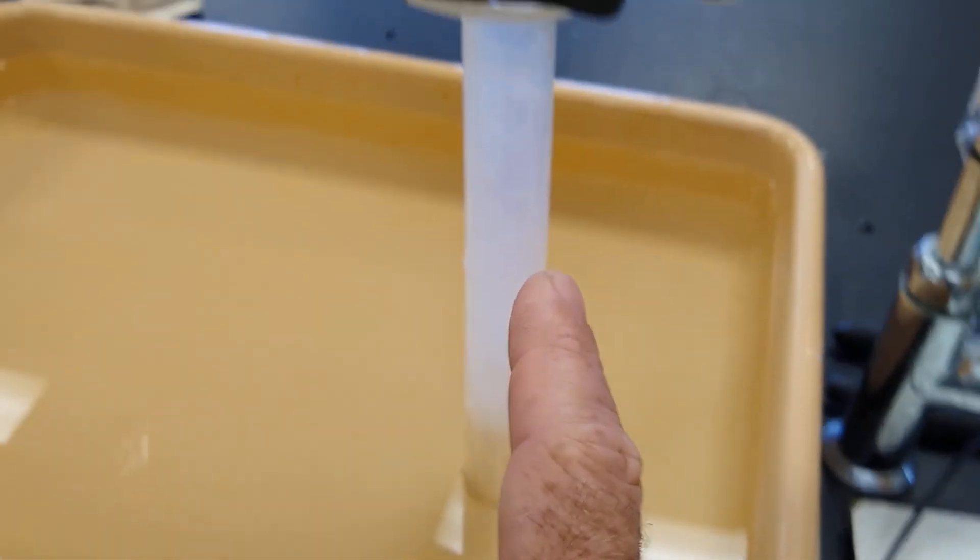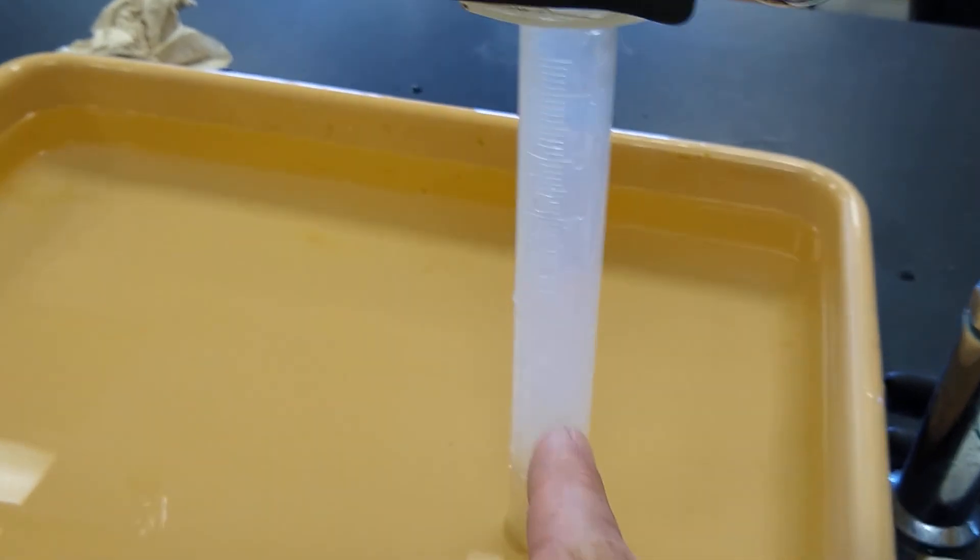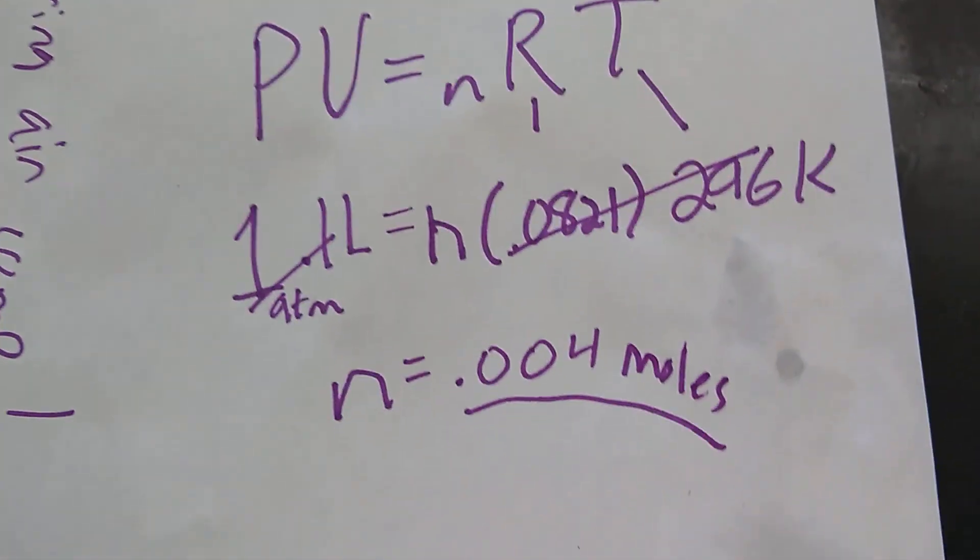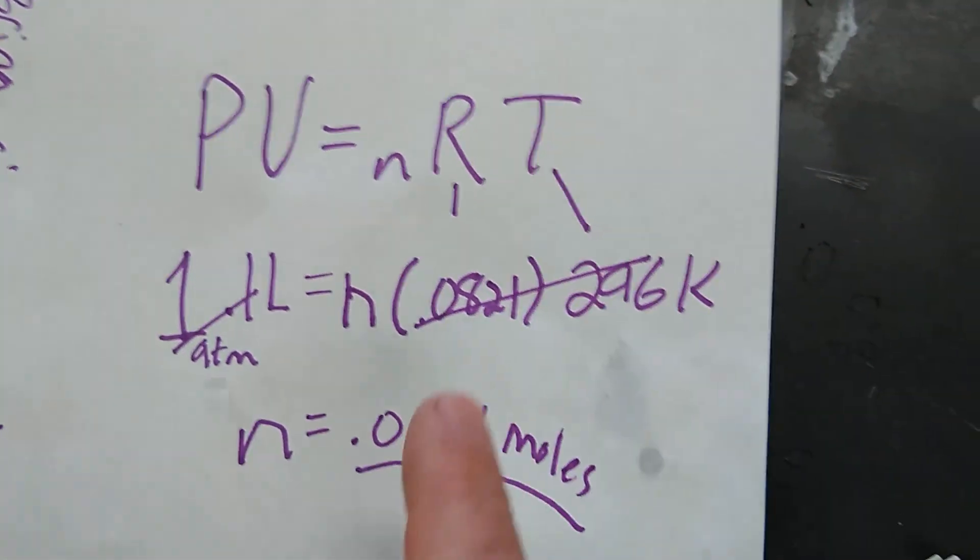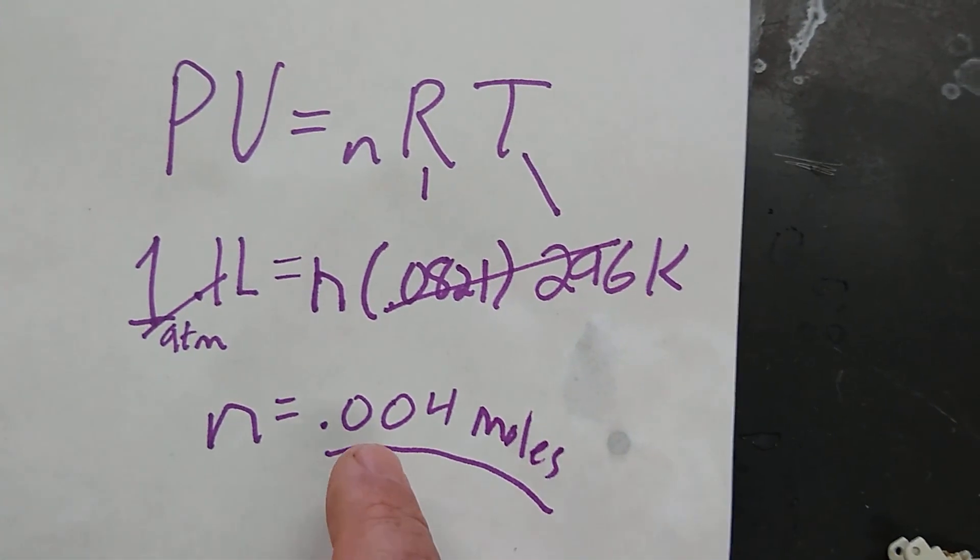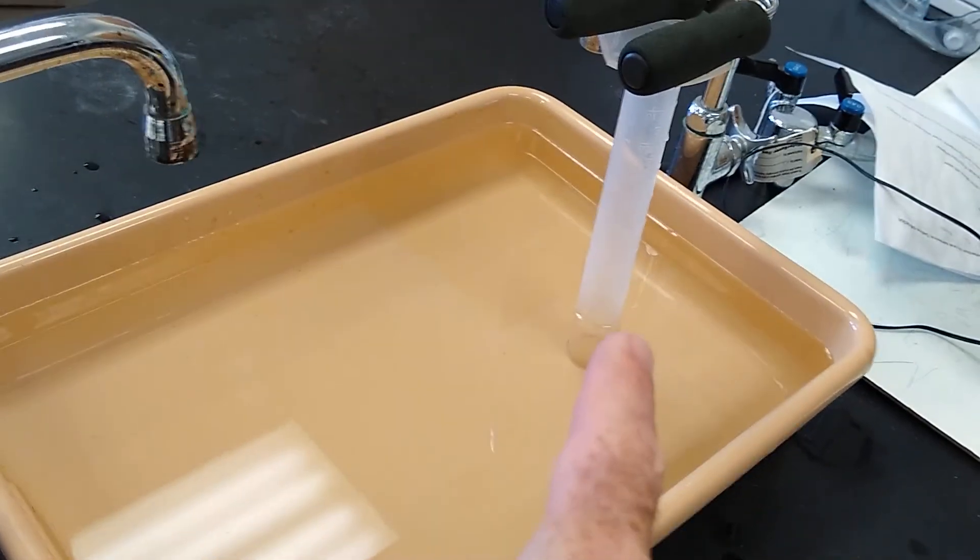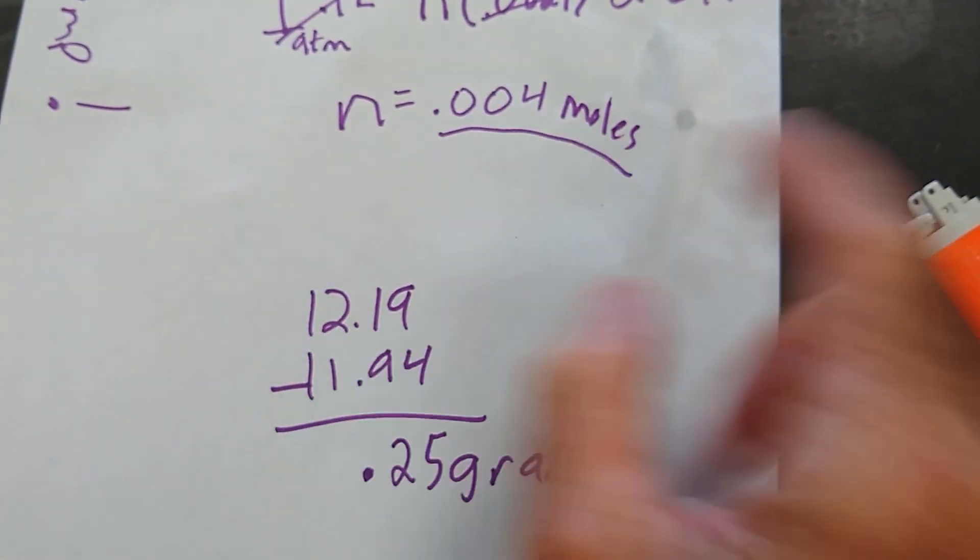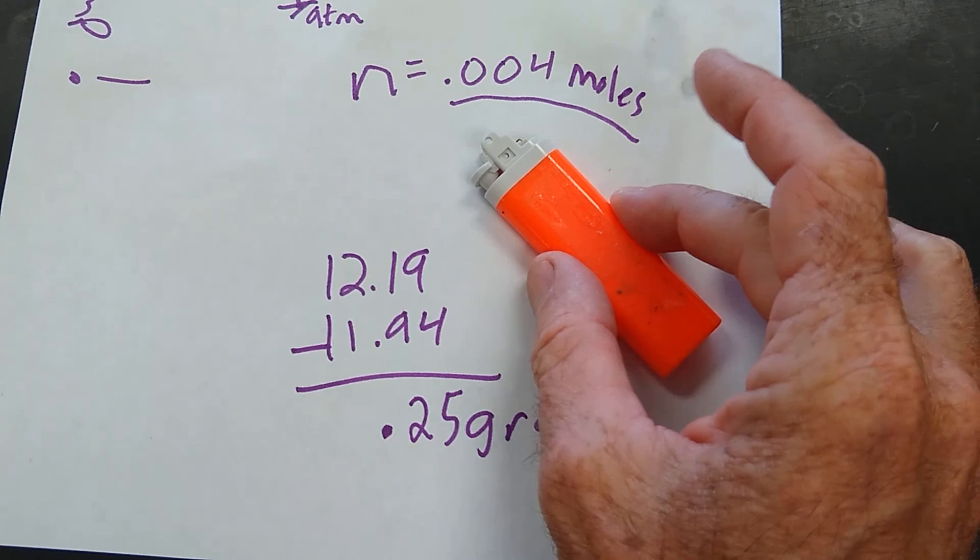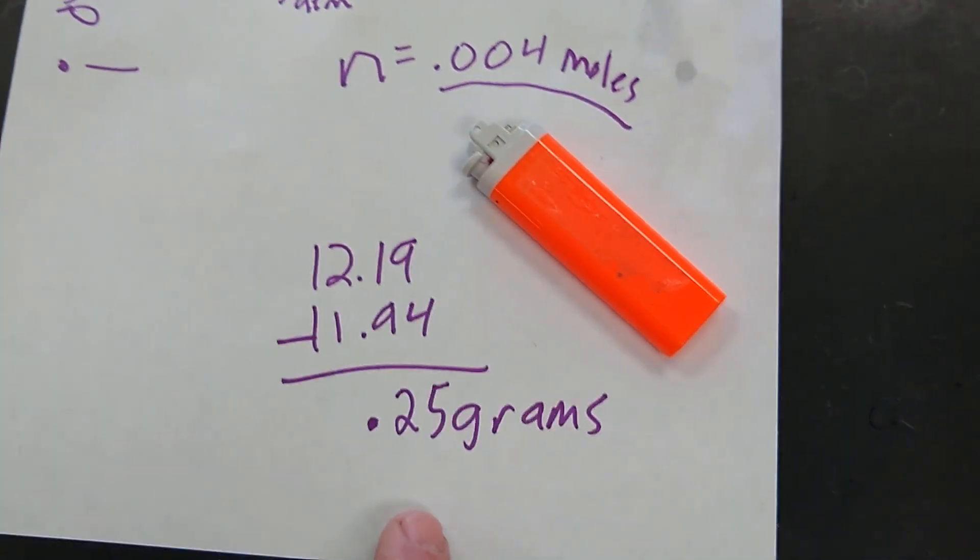That means 0.25 grams of gas are missing from the lighter. Therefore, there are 0.25 grams of gas in the cylinder. We know from using the ideal gas law that there are 0.004 moles of gas in the cylinder. So now we know that 0.004 moles of this gas weighs 0.25 grams.